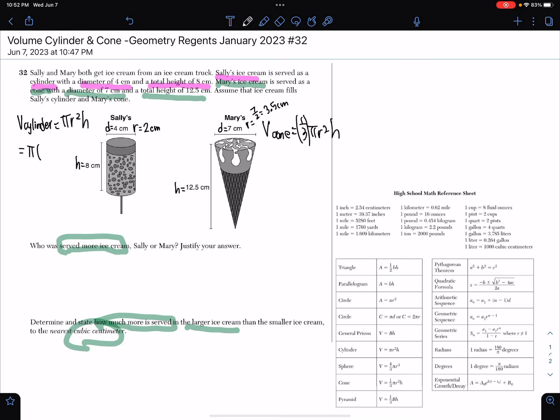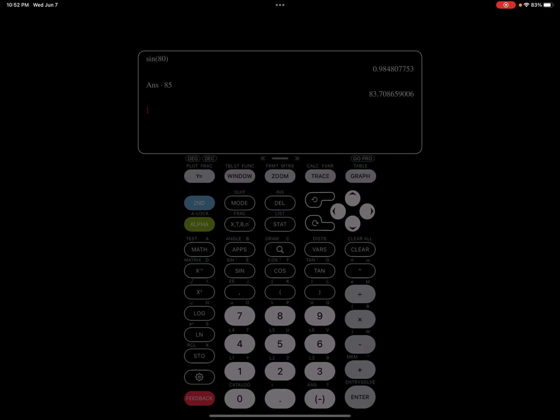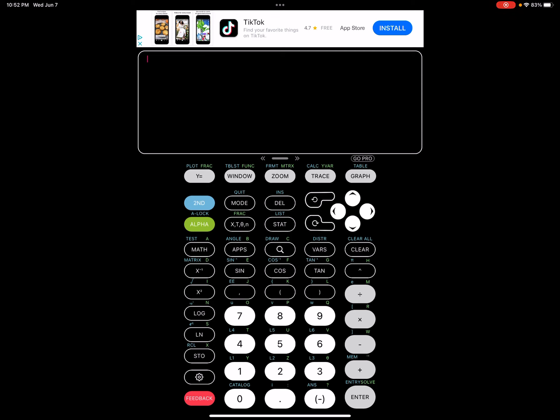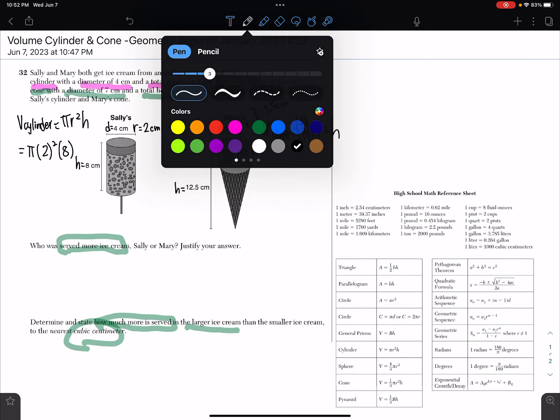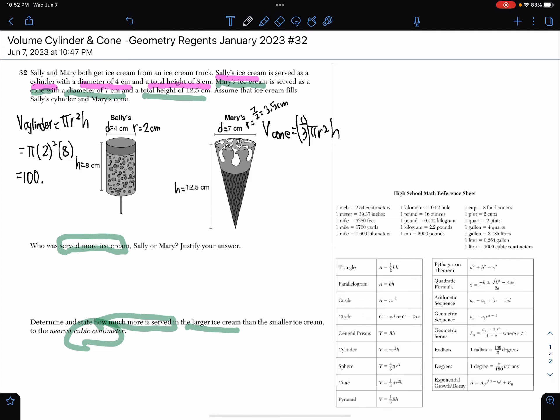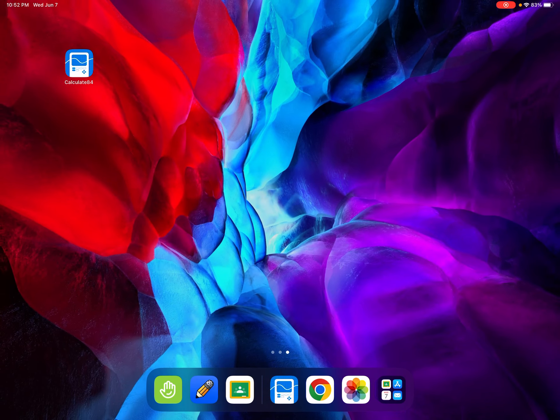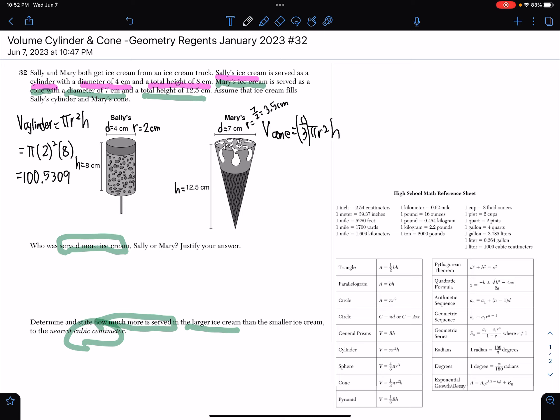We got π, the radius was 2 squared, and then we're going to multiply by 8. When you're putting π in the calculator you press 2nd caret, and then we had 2 squared, then times 8. When we put that in the calculator I get 100.5309. Keep in mind when you're measuring volume it's measuring how many cubic units fit in the figure, so Sally's cylinder holds 100.5309 cubic centimeters of ice cream.